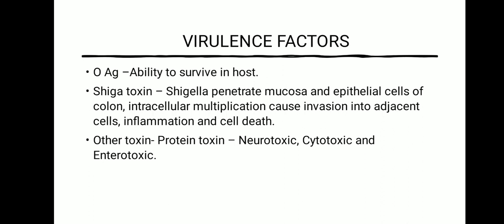It also produces other toxins that are protein in nature, such as neurotoxin, cytotoxin and enterotoxin. Neurotoxin damages the brain or the peripheral nervous system. Cytotoxin gives toxicity to living cells. And enterotoxin is a protein exotoxin that mainly targets the intestine.